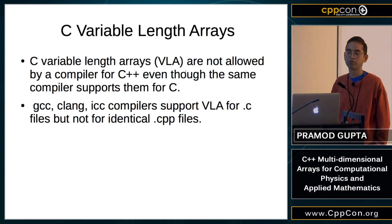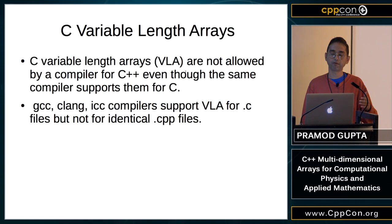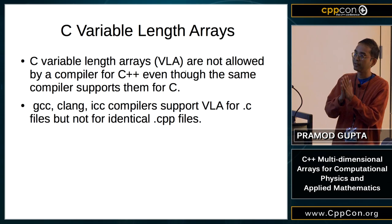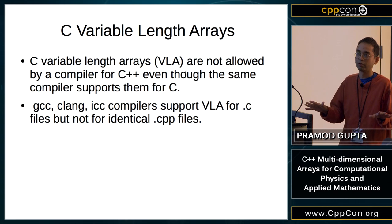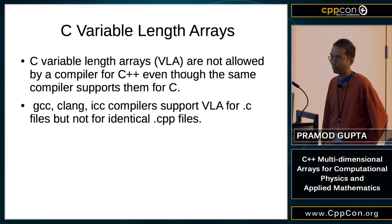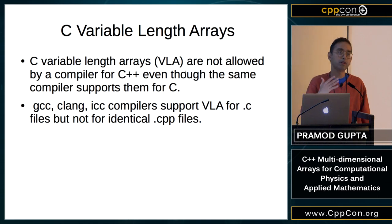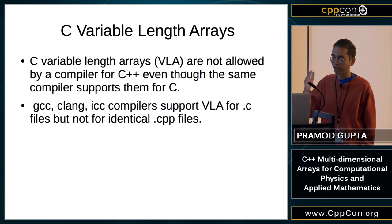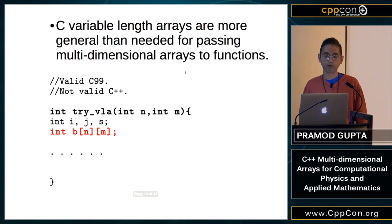C has a feature called Variable Length Arrays (VLAs) from C99. C VLAs are not allowed by a compiler for C++ even though the same compiler supports them for C. The compiler says: if you have a .cpp file, I'm not going to allow this even though I know how to do it. GCC, Clang, ICC — they're all strict about this; they can give you extensions, but they won't allow VLAs in C++.